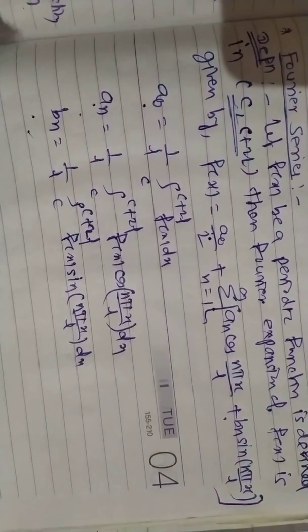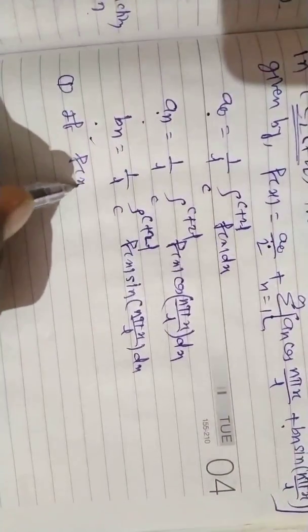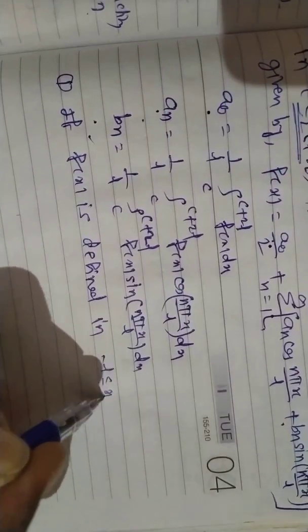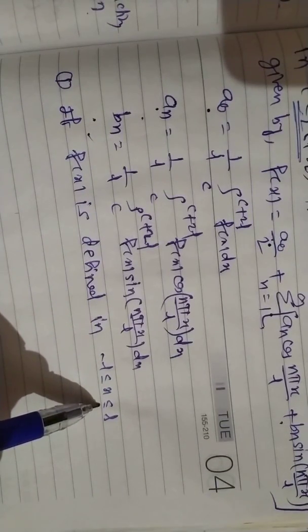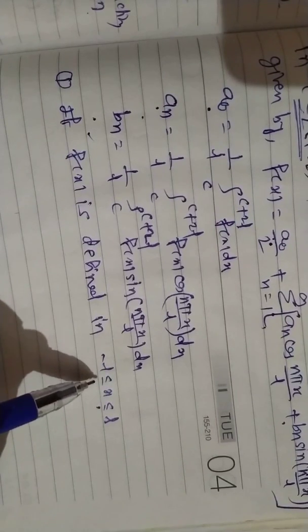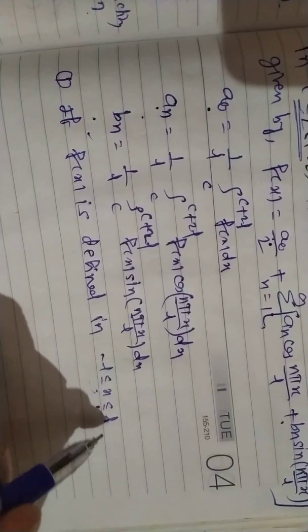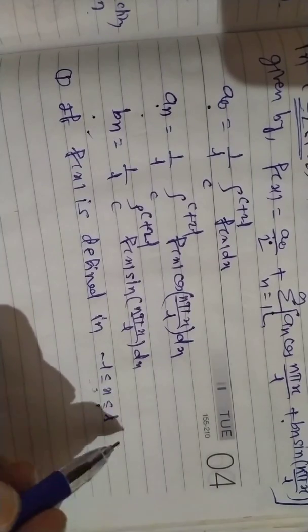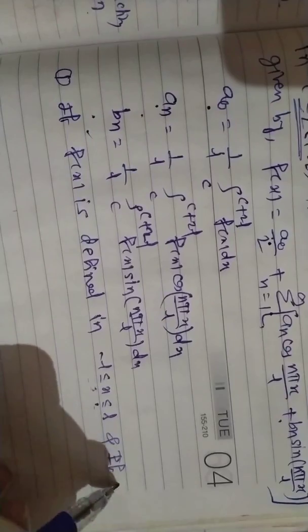There are three types. First: if f(x) is defined in -l ≤ x ≤ l, we must first check whether the function is even, odd, or neither. Case 1: f(x) is even. Case 2: f(x) is odd. Case 3: f(x) is neither even nor odd.